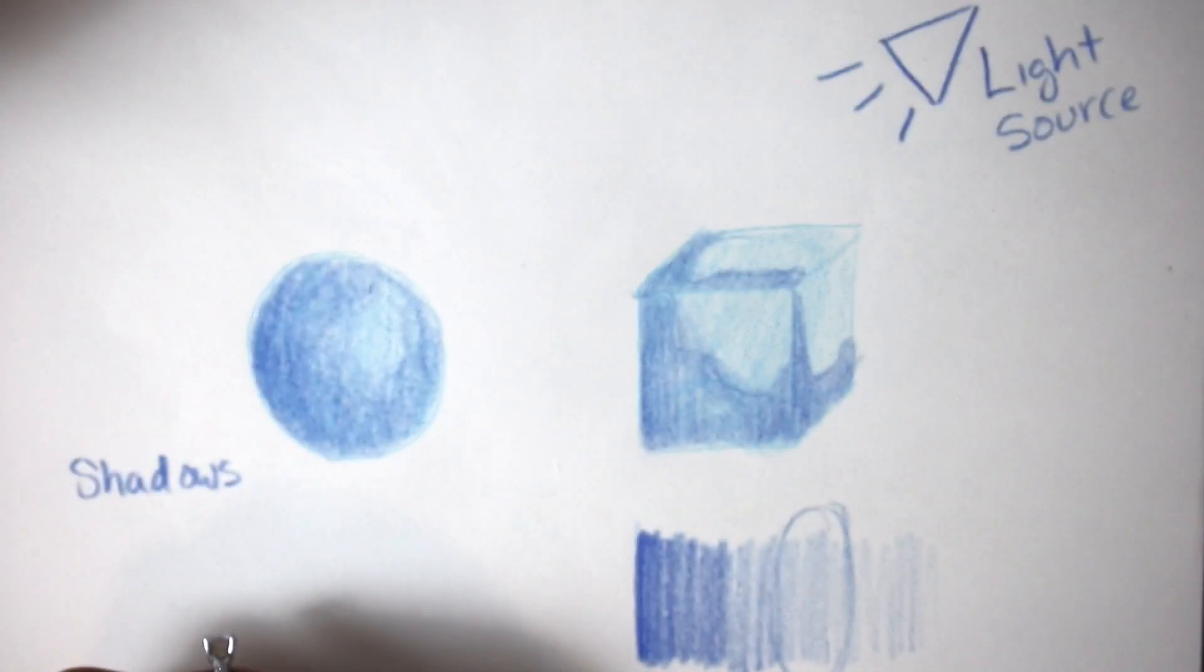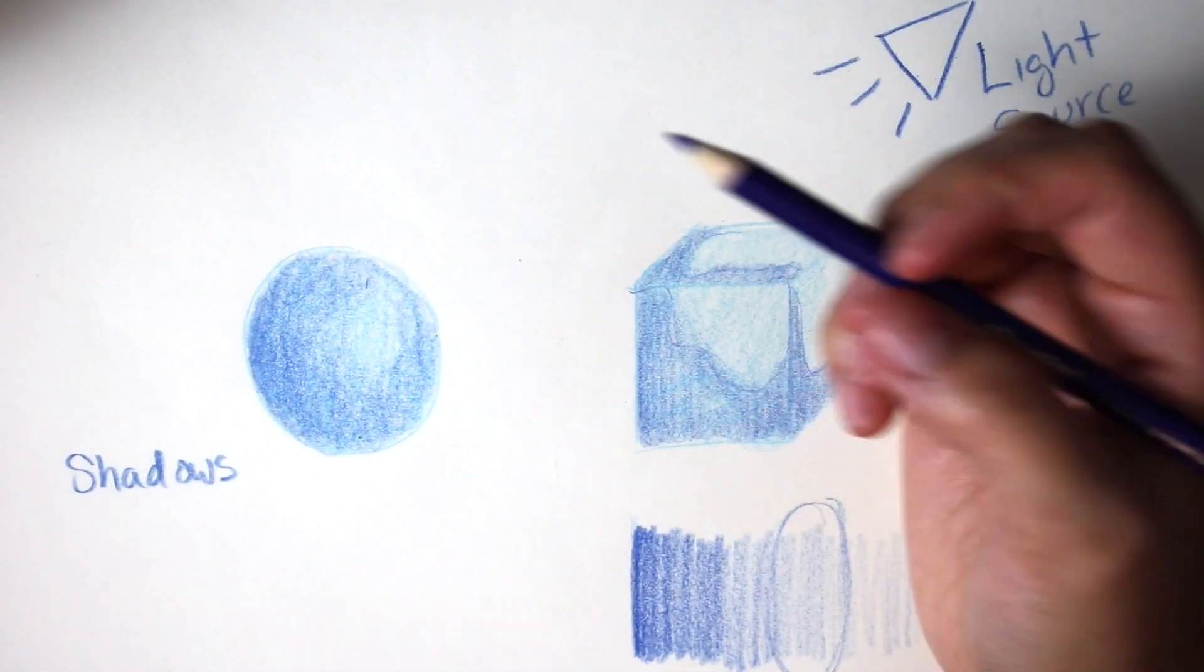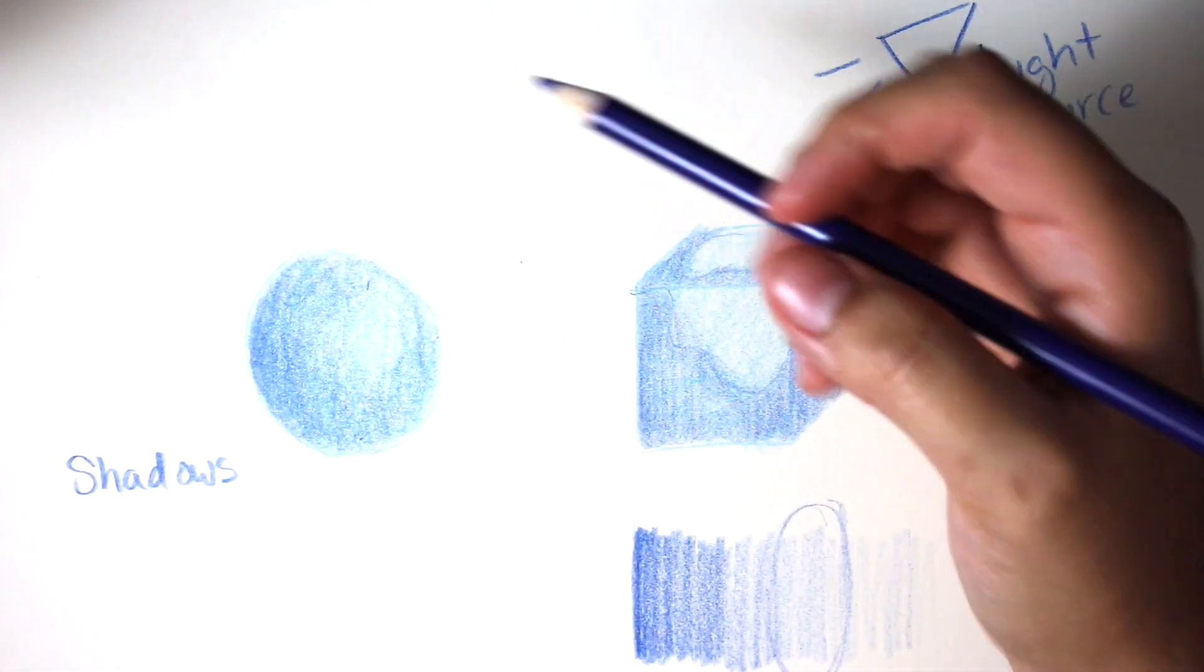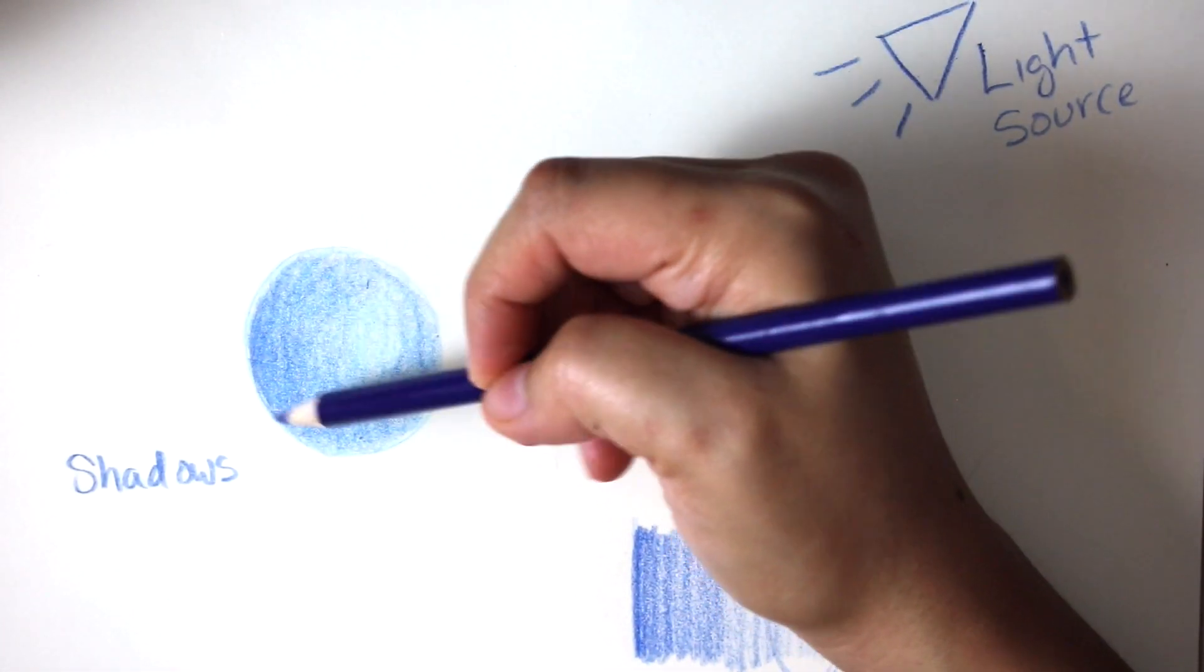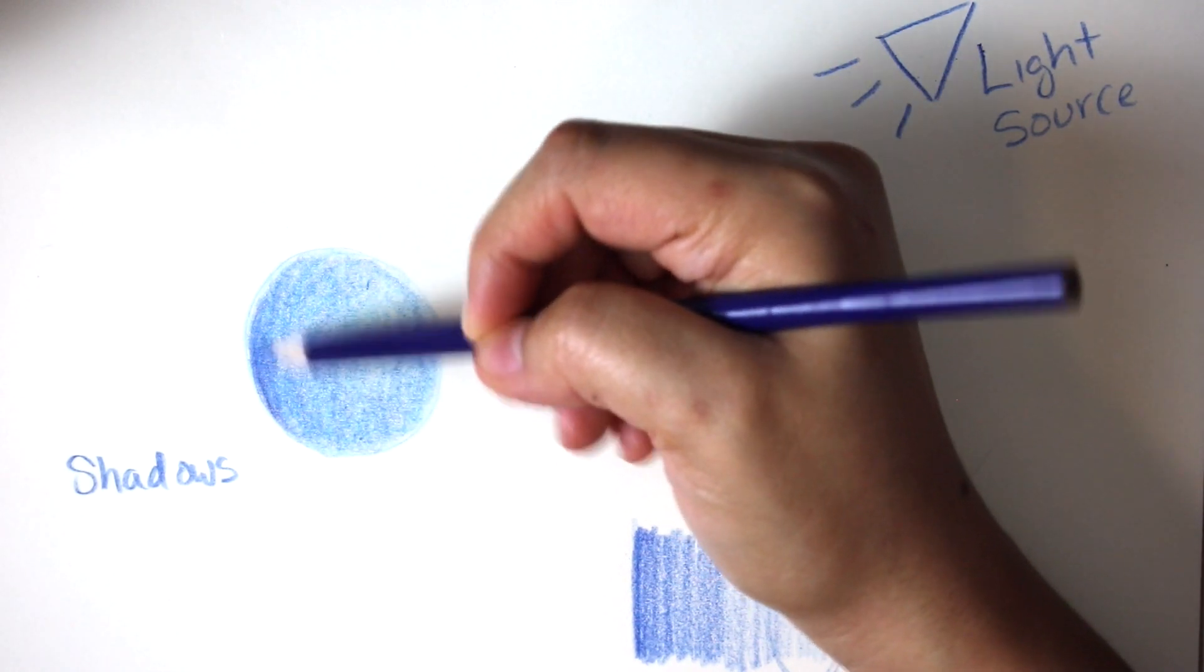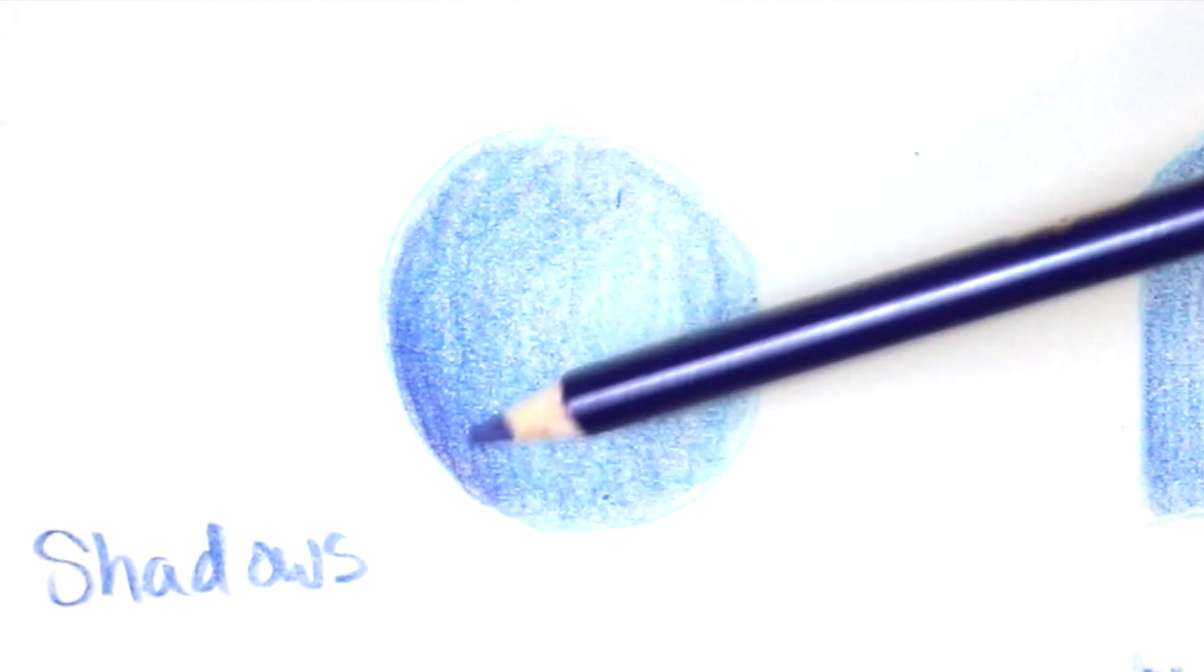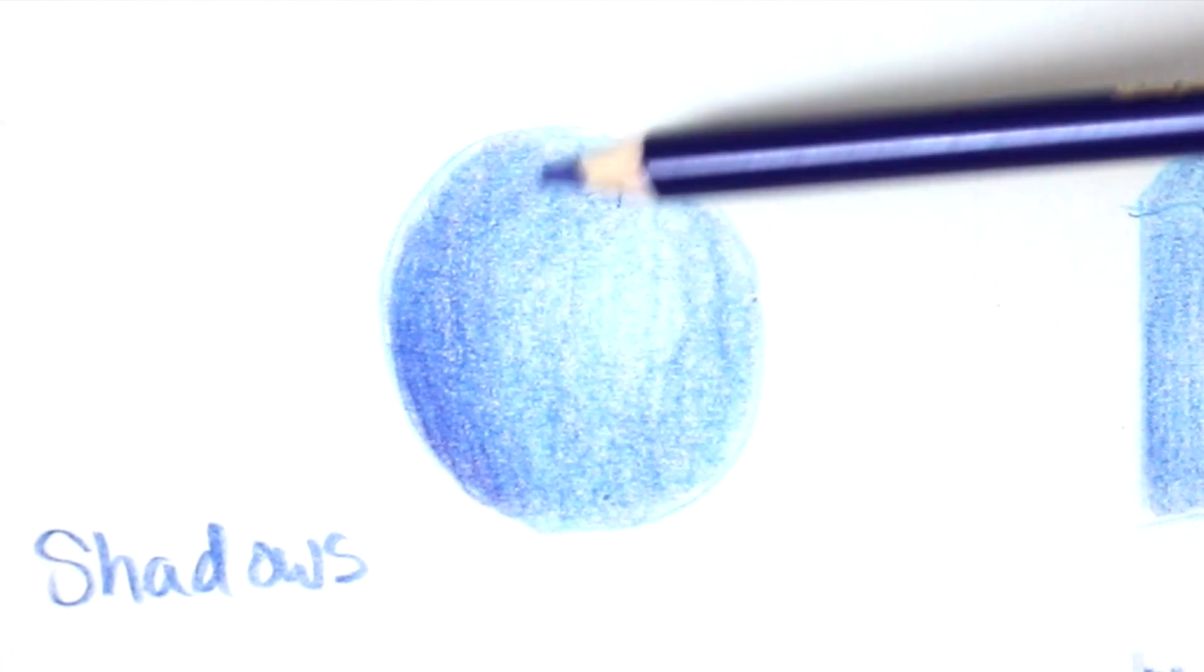Now I'm taking the darkest color of the set, which is violet in this case. Even though this color is going to be used to darken up the shadows, I still don't want to go too dark. I still want to color lightly, and because of those layers it's just going to automatically darken up. This part is a little easier because you already have the shadows set down, so all you have to do is literally go over them with this color.